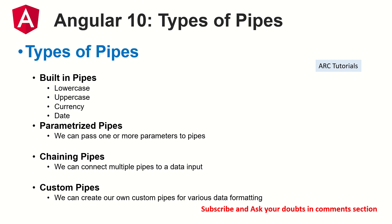Angular has some built-in pipes — those are readily available for us to use. Some of them are date, currency, uppercase, lowercase, and JSON. We can also pass parameters to them. For example, with date you can pass which format you want, and with currency you can pass a parameter specifying which country currency you want.